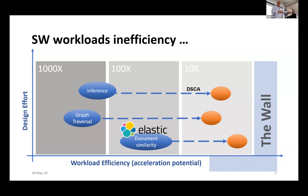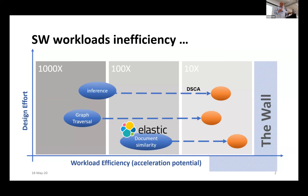Inference, mostly dominated by matrix multiplication, if implemented in software was near 1,000x from the wall. But it's implemented on GPU — a domain-specific computer architecture specialized for this workload — and that brings it much closer to the algorithmic wall. So to take a workload and get it closer to the wall, you design a new device: a domain-specific architecture.